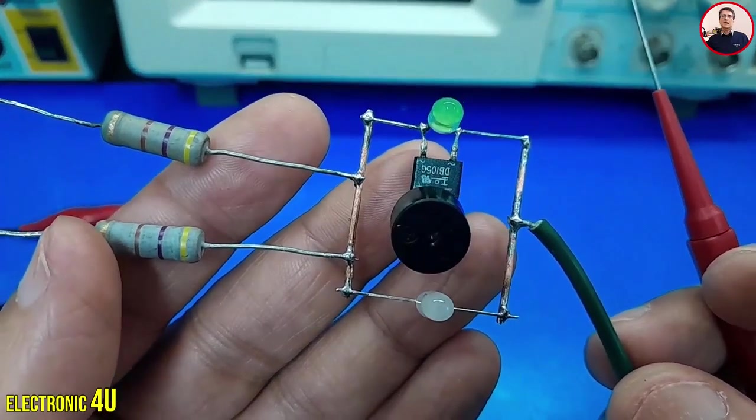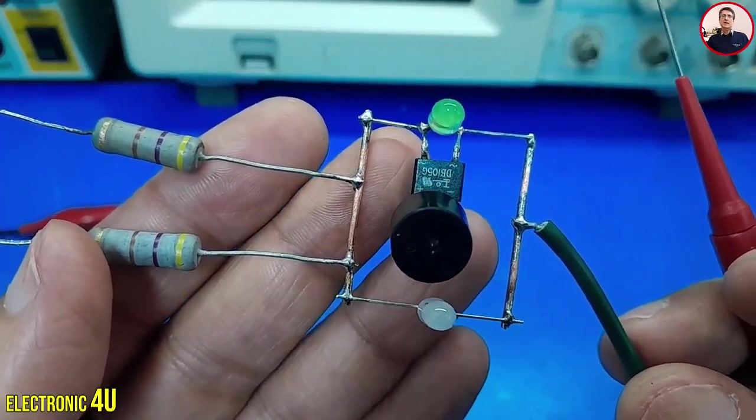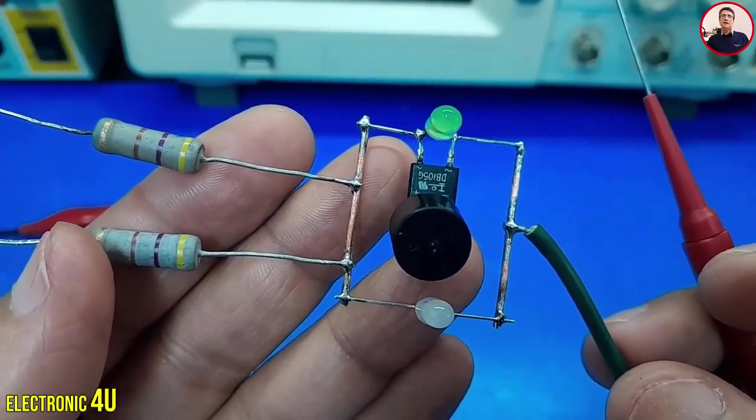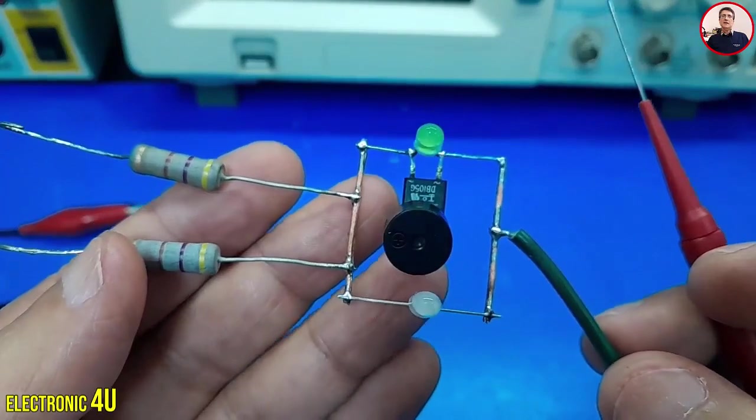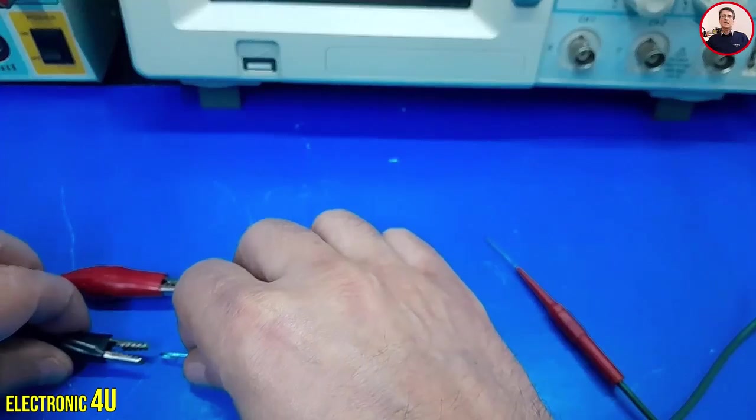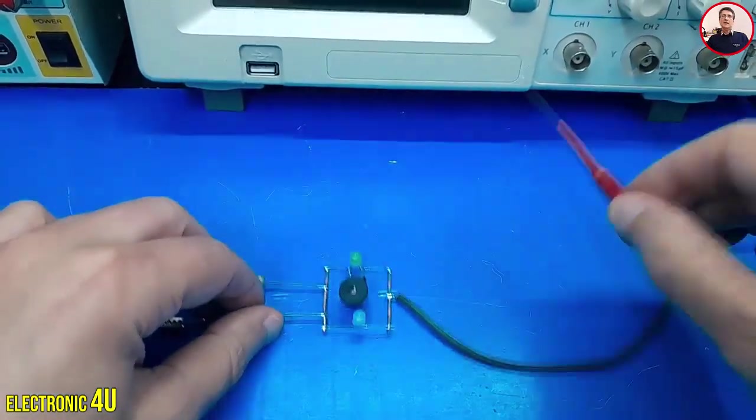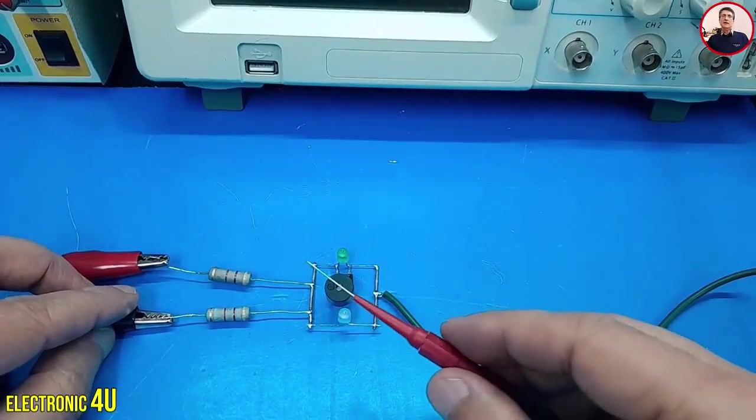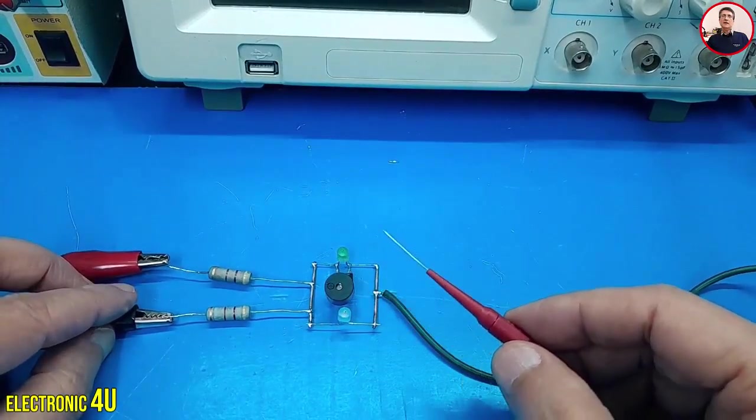I will try the circuit first and then explain the circuit according to the schematic. I connect the input voltage. This voltage is from the car battery. That is, these two wires are connected to the positive and negative voltage of the battery.